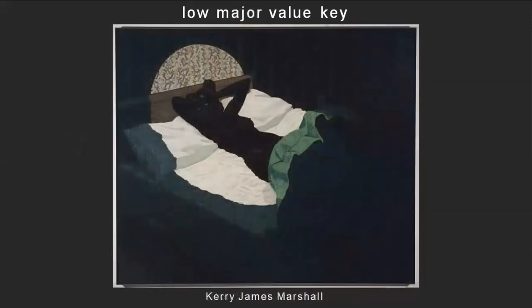Moving on, let's look at another low major value key painting — this is a painting by Kerry James Marshall. Across the image, very dark light moves across it. There is a spotlight on this woman in bed, and that creates high contrast between very light lights and very dark darks. So there's a full range, or nearly a full range, from darkest dark to lightest light. Now we're going to look at another painting by Kerry James Marshall in a low minor value key and see how the use of subdued value keys can totally shift the feeling of a painting.